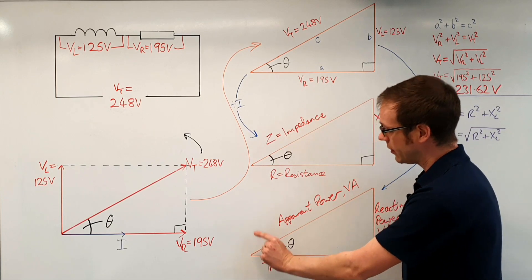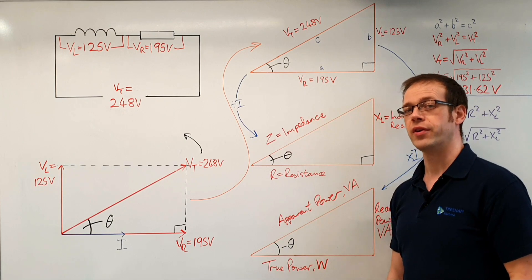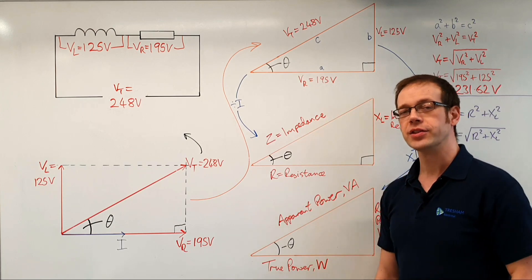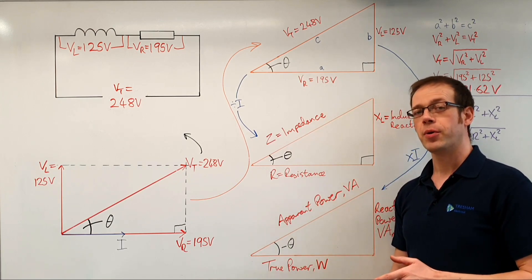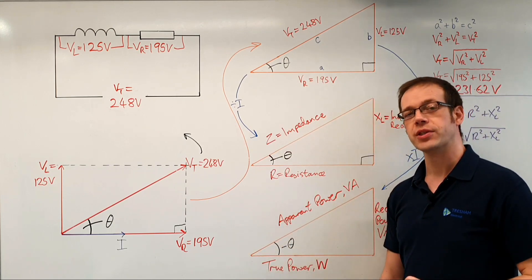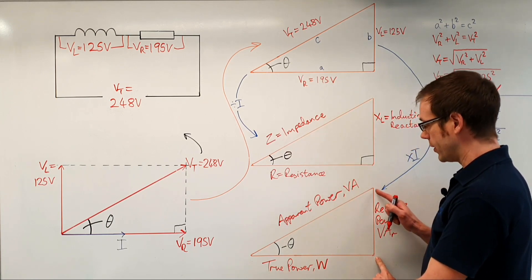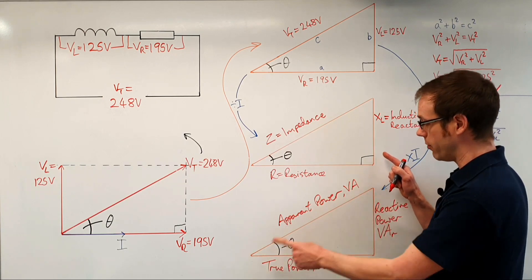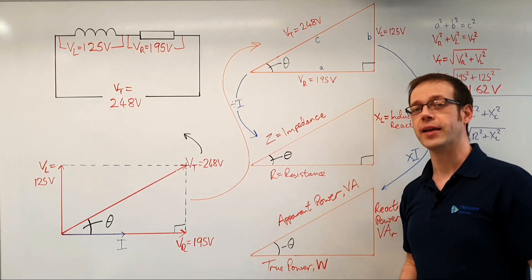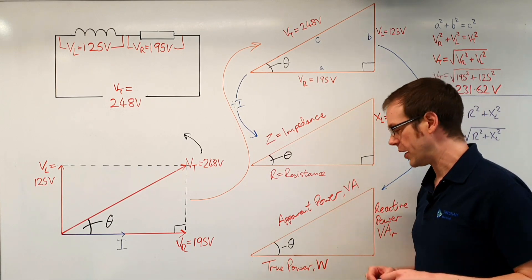So again we've got this idea — this side of the triangle represented the total opposition to current flow in the circuit, and this side represents the total amount of power that the circuit is dissipating. That's a really important number because it's this side of the triangle that your electricity company bills you for. And what's quite interesting is that as this reactive power gets bigger and bigger, the apparent power gets bigger and bigger as well, which means you're going to start getting charged more and more by the electricity company.